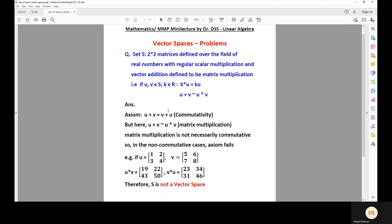So, this particular set S is not a vector space. So let me repeat. The set S of 2 by 2 matrices defined over the field of real numbers with regular scalar multiplication and vector addition defined to be matrix multiplication is not a vector space. Thank you.